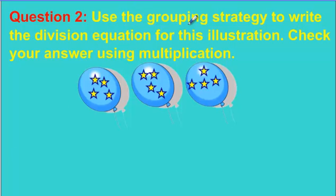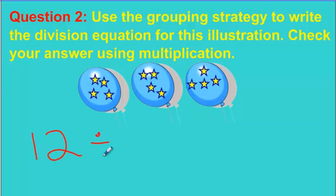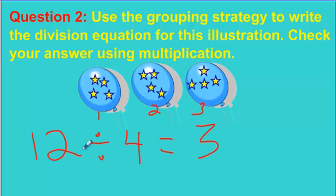Last question: use the grouping strategy to write the division equation for this illustration and check your answer using multiplication. We have four, eight, twelve stars — so you write twelve first. Groups of what? Each group has one, two, three, four stars — groups of four. How many teams do we have? One, two, three — we've got three. Four times three makes twelve. Twelve matches twelve — so we did it correctly.